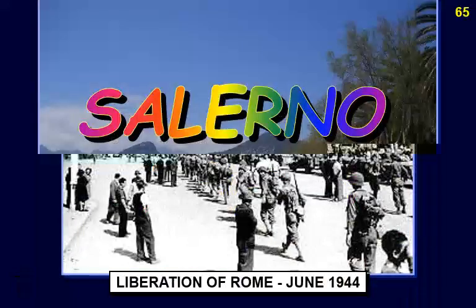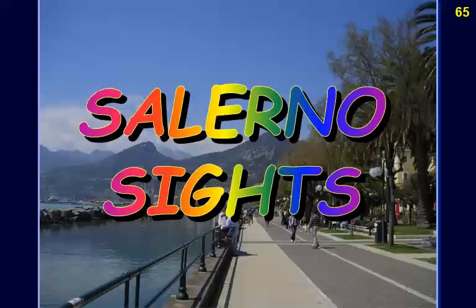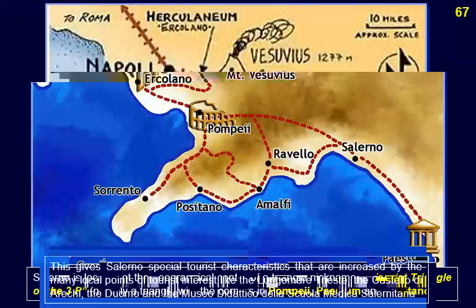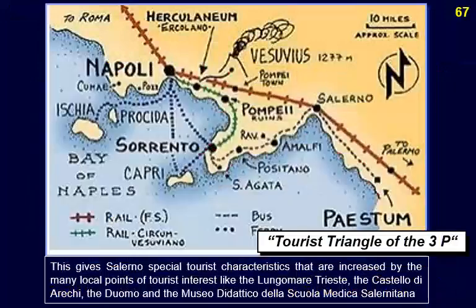Salerno is located at the geographical center of a triangle nicknamed the 'Tourist Triangle of the Three P's' — a triangle with corners in Pompeii, Paestum, and Positano. This gives Salerno special tourist characteristics, increased by many local points of tourist interest like the Lungomare, the Castello di Arechi, the Duomo, and the Museo Didattico della Scuola Medica Salernitana.